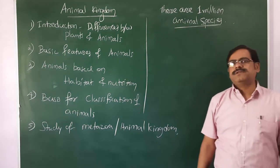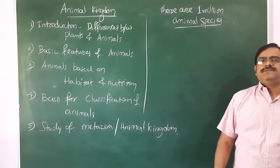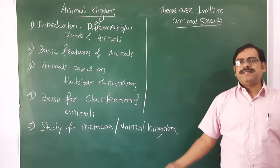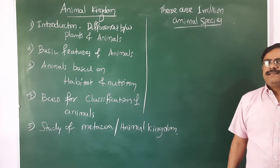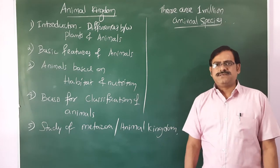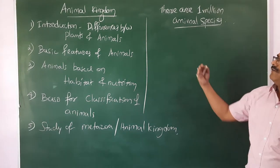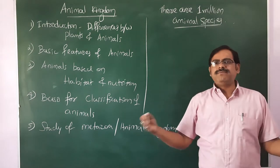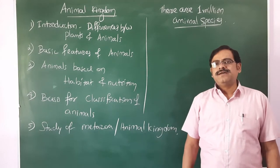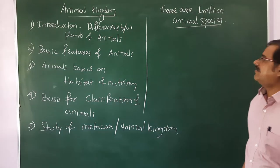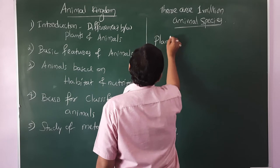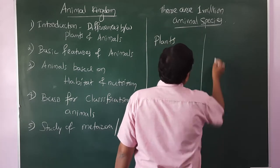Some reports say there may be seven million or 1.5 million species. One million refers to nearly 10 lakh. So the well-known species number about 10 lakh. Out of that, let us understand what may be the basic differences between animals and plants.